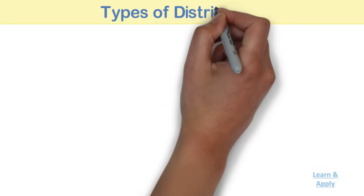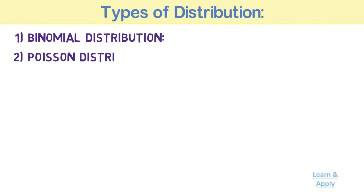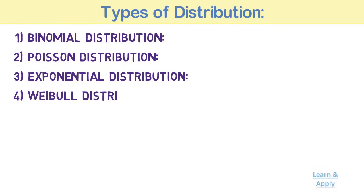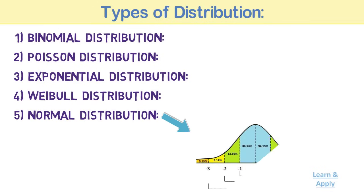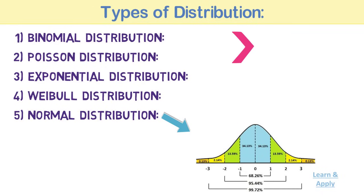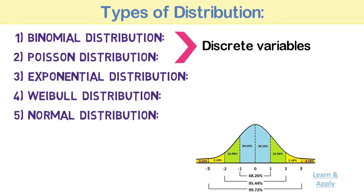Types of Distribution: there are many types of distribution of data, but we are focusing on mainly 5 types: 1. Binomial Distribution, 2. Poisson Distribution, 3. Exponential Distribution, 4. Weibull Distribution, 5. Normal Distribution. I have already explained normal distribution in detail during the study of histogram, but it's worth seeing again. Out of these 5 distributions, Binomial and Poisson distribution are for discrete variables, whereas the remaining 3 are for continuous variables.